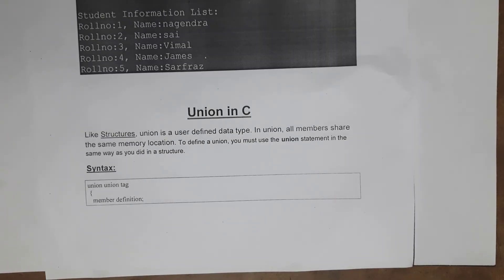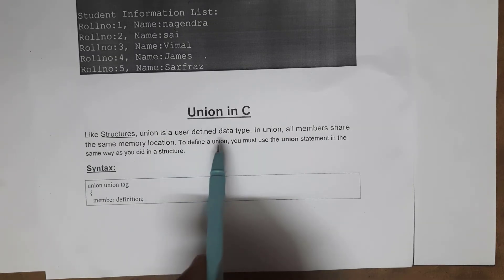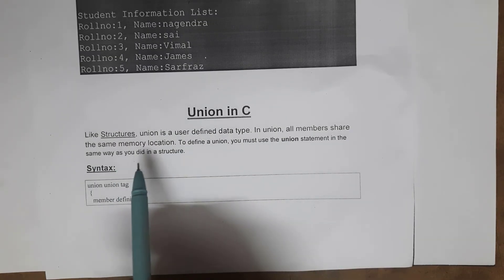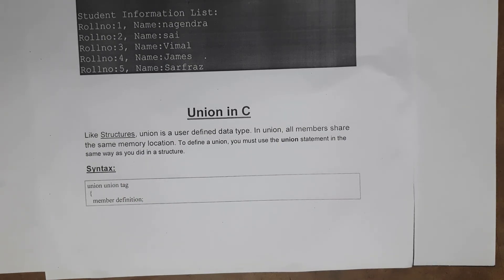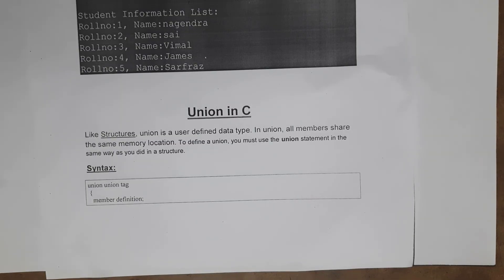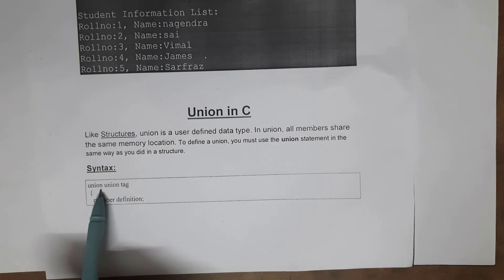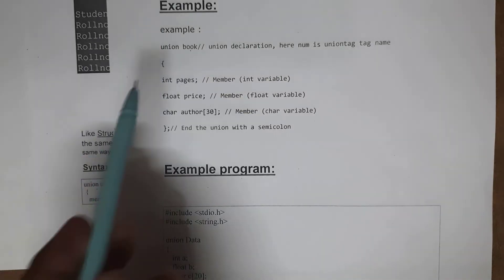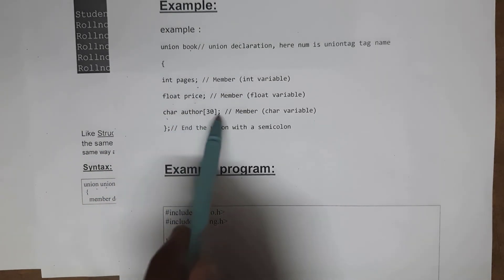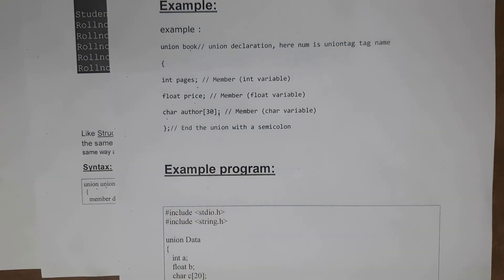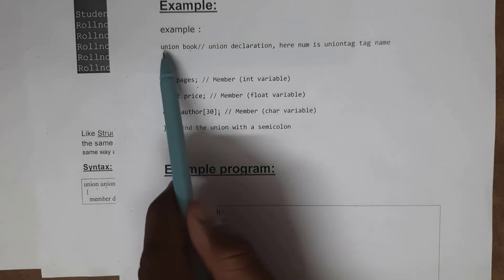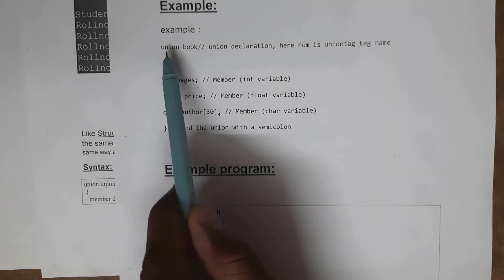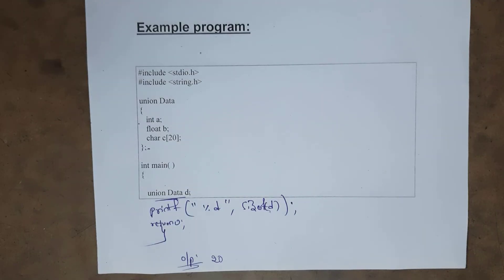Next topic is unions in C. Whatever variables of different data types you include in a union, all members share the same memory location. To define a union you use the 'union' statement, in the same way as structures. For structures we use the 'struct' keyword; for unions we use the 'union' keyword. The syntax is: union union_tag { members; }. For example: union book { int pages; float price; char author[30]; }.